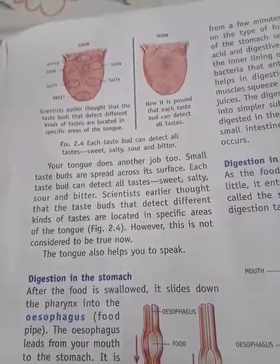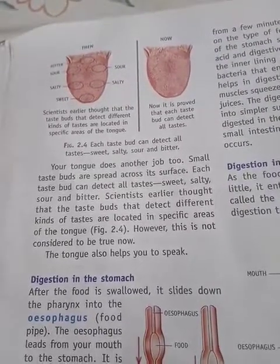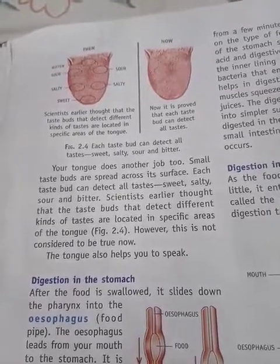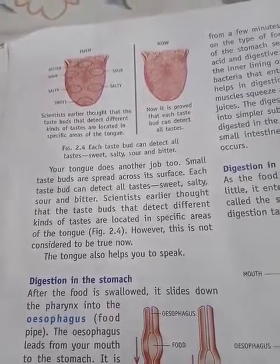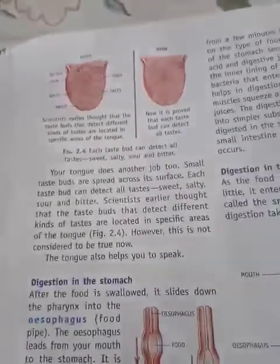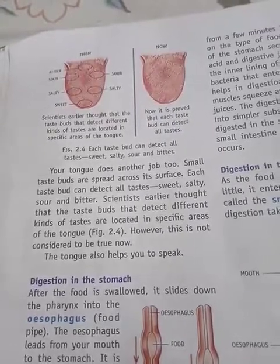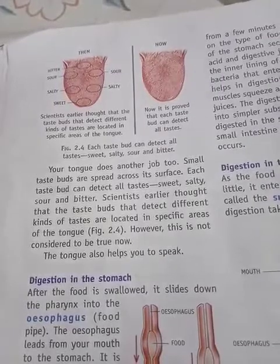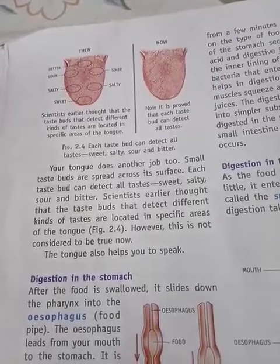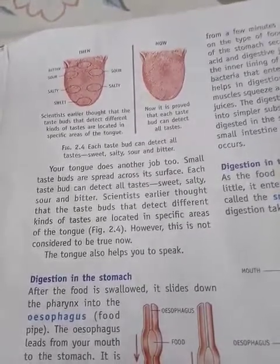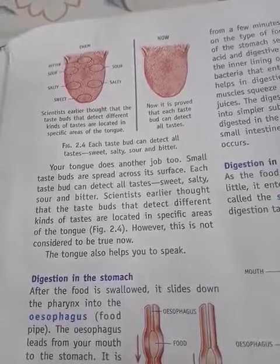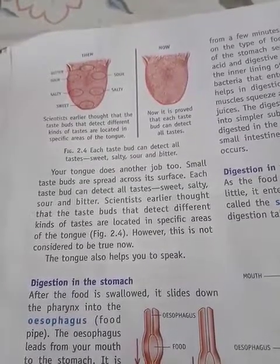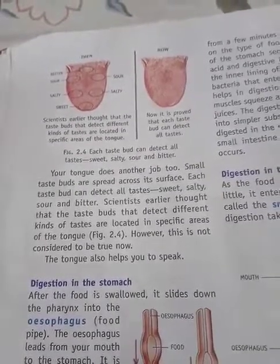Now let us learn about the function of the tongue. It is a muscular organ attached at the back to the floor of the mouth. It is free at the front and helps in mixing saliva with the food, swallowing the food, talking or speaking, and tasting with the help of taste buds for sweet, salt, sour, and bitter food. The salivary glands secrete saliva which breaks down starch into sugar.